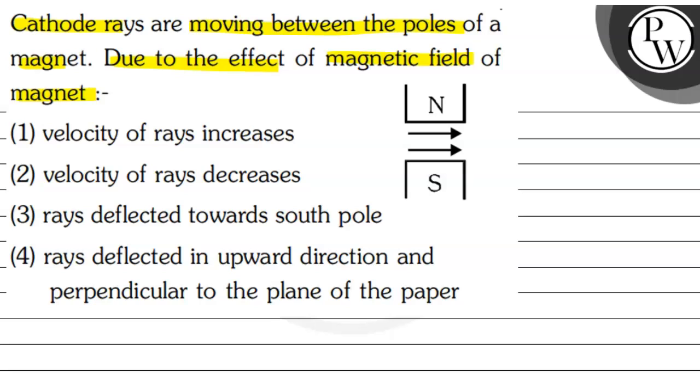In the first case, you are looking at the magnetic field with North and South Pole, and this is going to be cathode rays. So velocity will increase or decrease, or deflect towards the South Pole, or rays are deflected in upward direction and perpendicular to the paper.